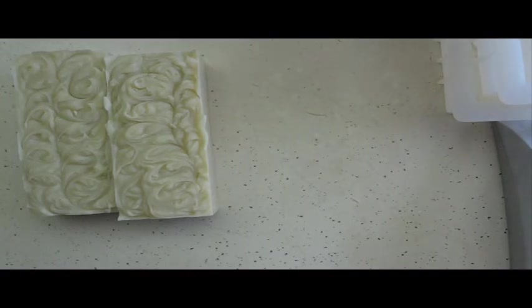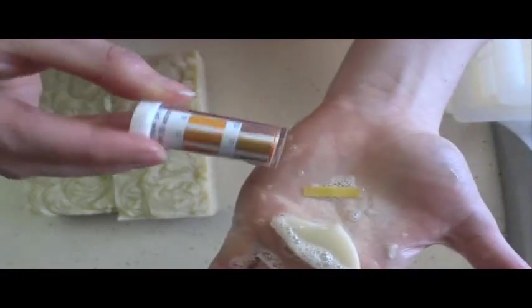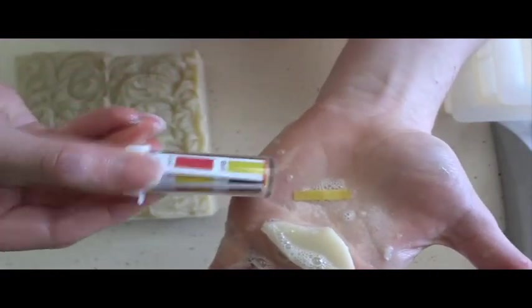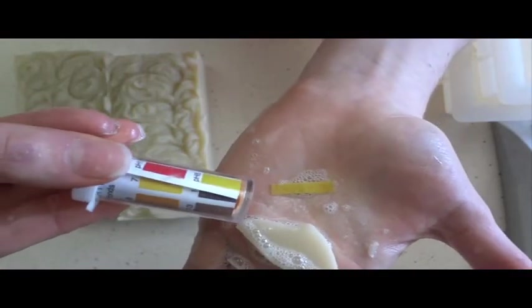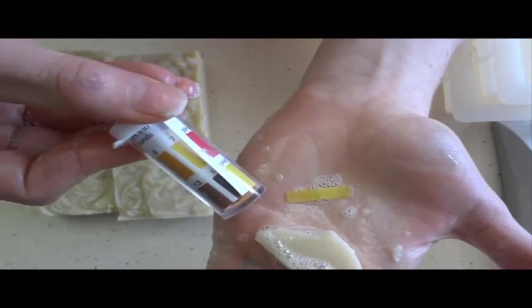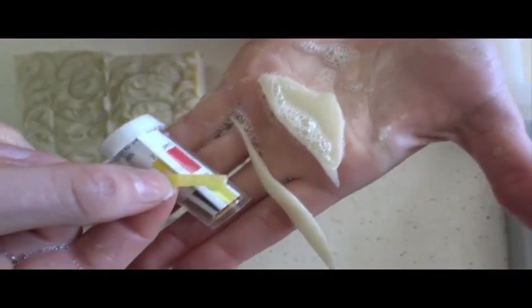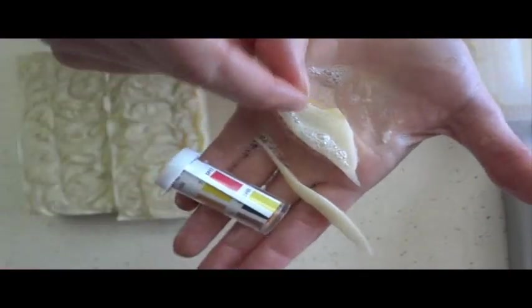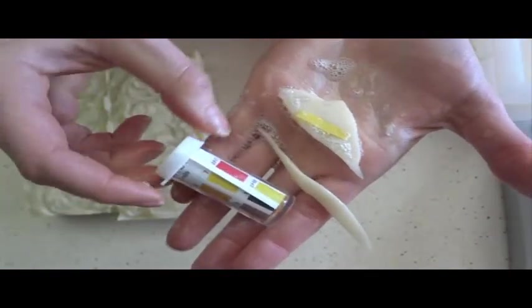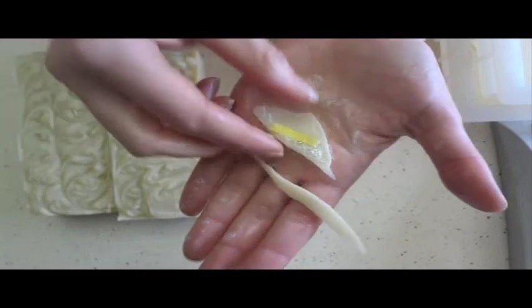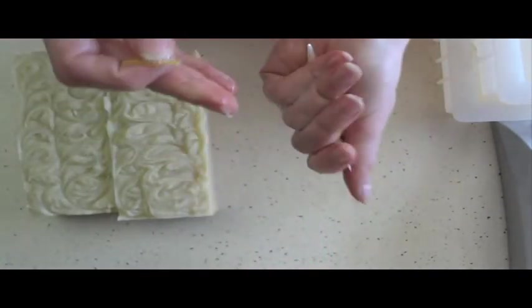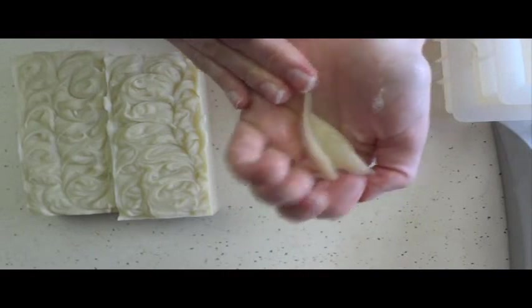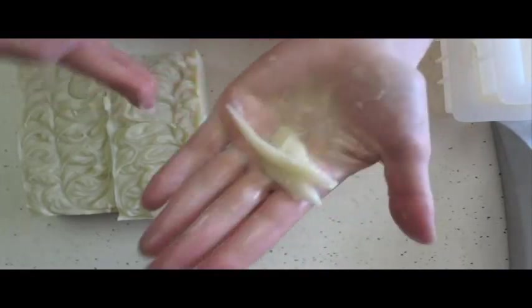And then, once you do that, you can compare it to these colors. So, there's the 7 and there's the 8 right there. And this one looks like it's about halfway through. So, I would say that this is about pH 7.5. So, it's nice and mild. It's safe to use right away. That is the benefit of hot process and cold process oven process soap. That's a mouthful, cold process oven process.